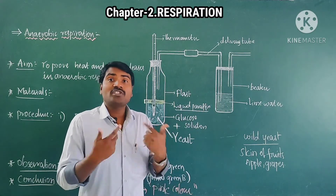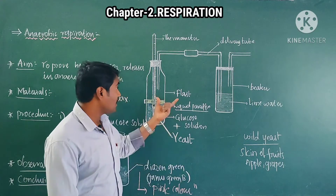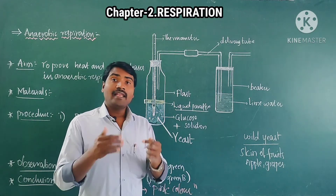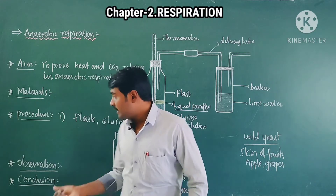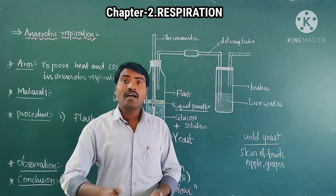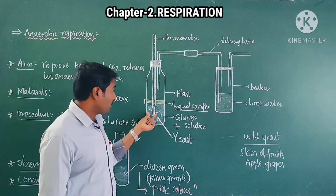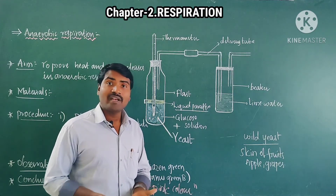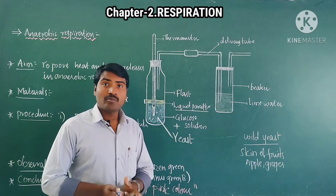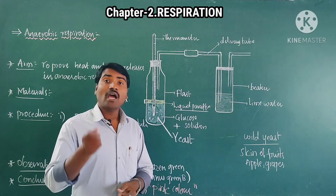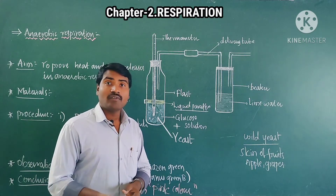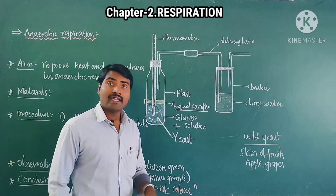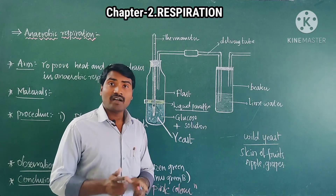This completes the procedure of the experiment. To recap: take glucose solution in a flask, slightly heat for one to two minutes to remove dissolved oxygen. If in doubt, use Janus Green indicator — if there is little or no oxygen, the blue dye converts to pink color. Then add yeast to the glucose solution.